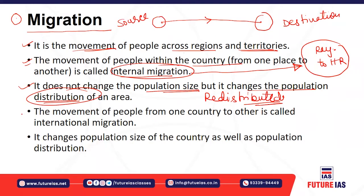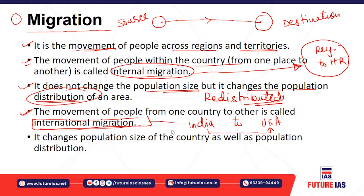When the movement of people occurs outside the country — for example, from India to the USA — that type of migration comes under international migration, meaning the people are leaving the country's territorial jurisdiction. That type of migration is denoted as international migration.